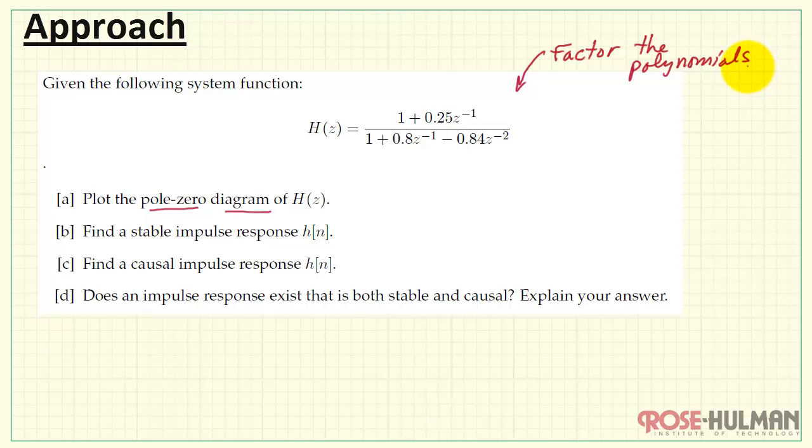For the purposes of finding a pole-zero diagram, we need to factor the numerator and denominator polynomials. It will also be easier for plotting the pole-zero diagram if we are working in terms of z rather than z inverse. Therefore, for this problem, we can multiply top and bottom each by z squared.